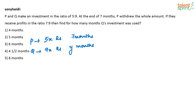They are receiving the profits in the ratio 7 is to 9. So how is profit shared in partnership questions? The profit is shared between the two people in terms of the amount they have invested multiplied by the period for which the investment has been there. That is the ratio in which you will share the profit.